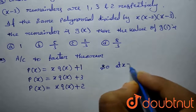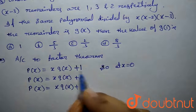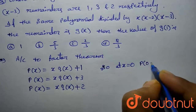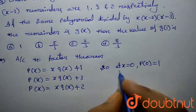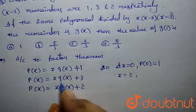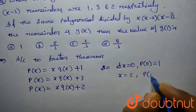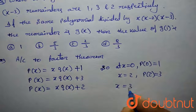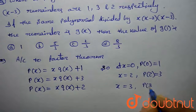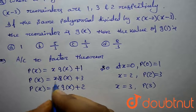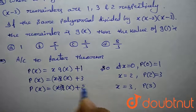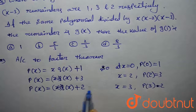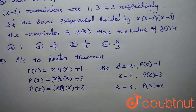So at x = 0, the equation becomes p(0) = 1. At x = 2, the equation gives p(2) = 3. At x = 3, since x minus 3 equals 0, we are left with p(3) = 2.